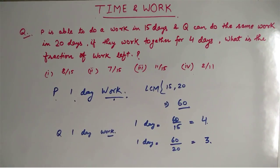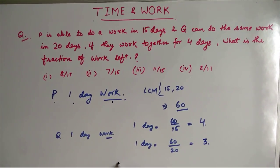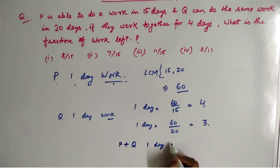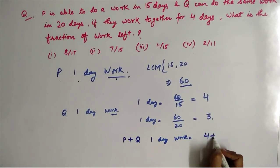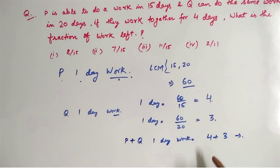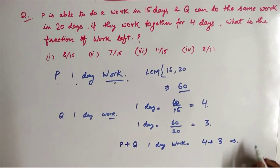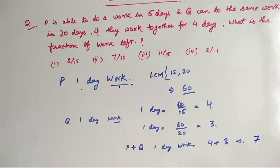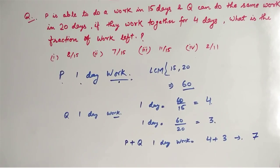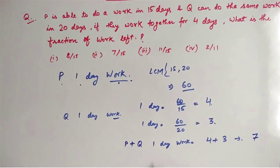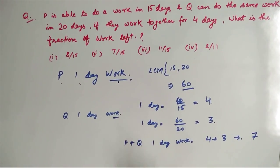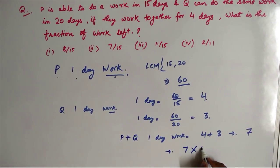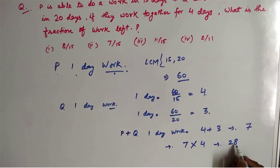Now they start working together. P plus Q's one-day work will be 4 plus 3 — the addition of one day's work of P and one day's work of Q — giving us 7. So 7 amount of work will be completed in one day if P and Q are working together. They are working for 4 days, so they will complete 7 into 4, which is 28 amount of work.